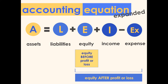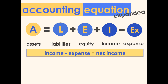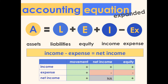After adding the income and deducting the expenses we get the equity balance after profit or loss. Also recall that income minus expense gives you net income. An increase in income would increase net income and equity. An increase in expense would decrease net income and equity. Just remember that income, net income, and equity all have the same movements — only expense has the opposite effect.